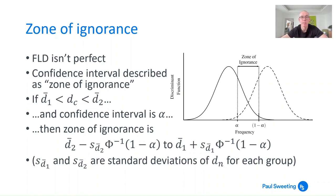Fisher's Linear Discriminant isn't perfect. There's a confidence interval called the 'zone of ignorance': if you get a score falling within this zone — defined by a particular level of confidence — you're not certain whether the firm is going to default or not default. The zone of ignorance is calculated by looking at the lower tail of the right-hand distribution and the upper tail of the left-hand distribution, calculated as the averages minus a normal distribution function multiplied by the standard deviation within each group.